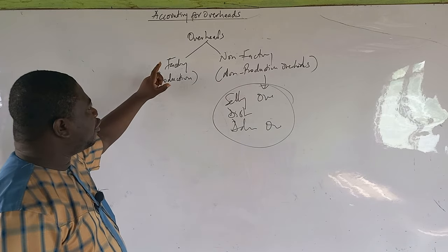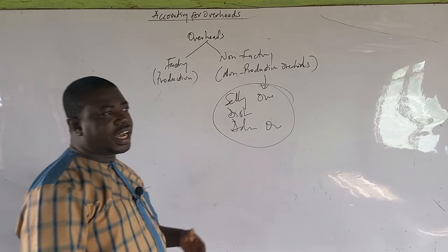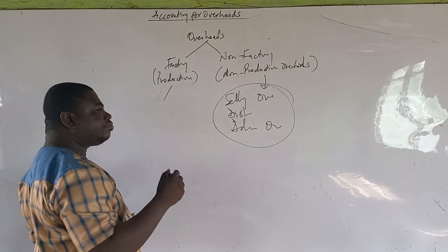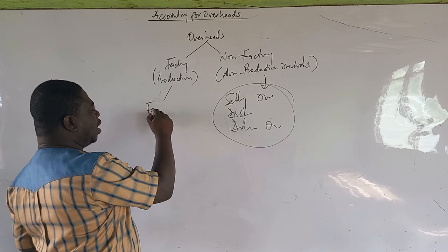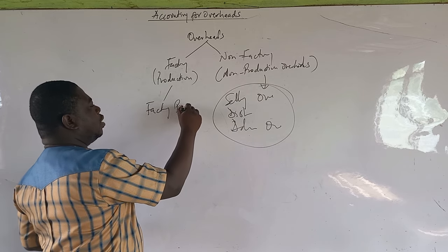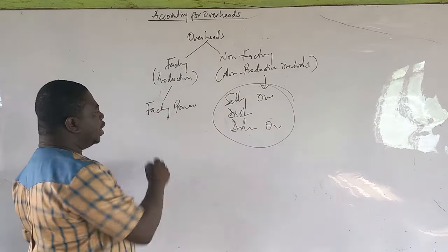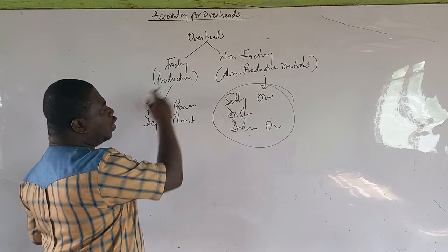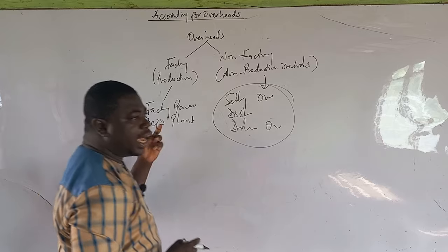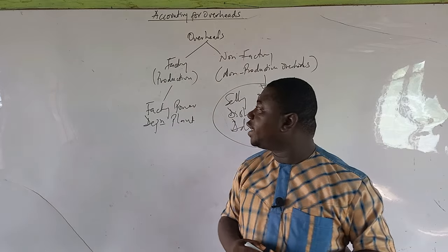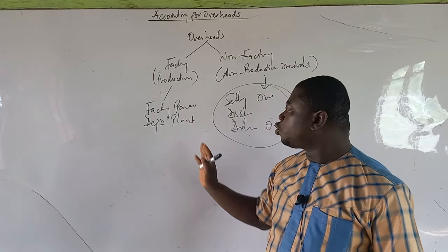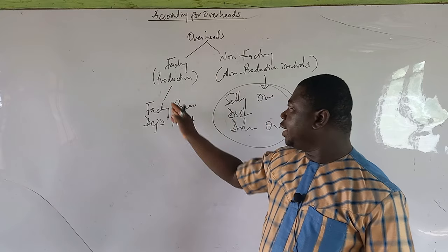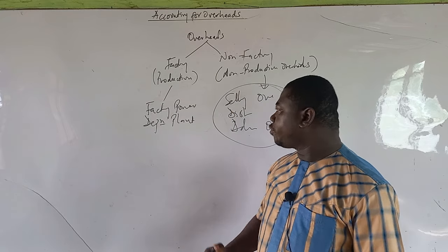Production or factory overheads are overheads incurred in the factory — like factory power, or depreciation of plant and machinery used in the factory. These things happen in the factory, so overheads traceable to or incurred in the factory are called factory overheads.